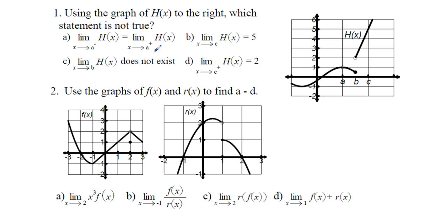We have the limit as x approaches a from the left side of h of x equals the limit as x approaches a from the right side of h of x. As we approach a from the left side and from the right side, we are honing into the same value here, even though the function does not appear to be defined with this hole here at x equals a. So that actually is true. We know that's not a correct answer.